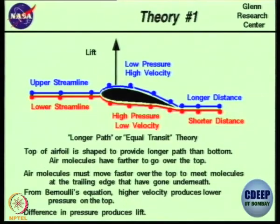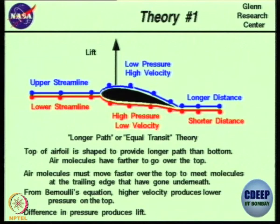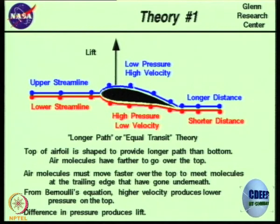Because the particle on the top side travels at a faster rate, it has higher velocity. As per Bernoulli's principle in incompressible flow — which can be assumed here since no shock waves are present — higher velocity produces lower pressure on the top surface, and the pressure difference produces lift. This is the first theory.